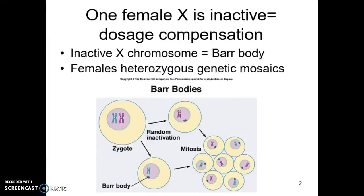Sometimes we see examples in organisms where one of the X chromosomes is actually inactive — it's not functional. It's what we call a Barr body. So if the female's X is inactive, the other X has to pick up the slack. She's going to have two X chromosomes, and one of them, for whatever reason, becomes inactive and does not express. The other X chromosome for that 23rd pair will have to basically double up the expression.